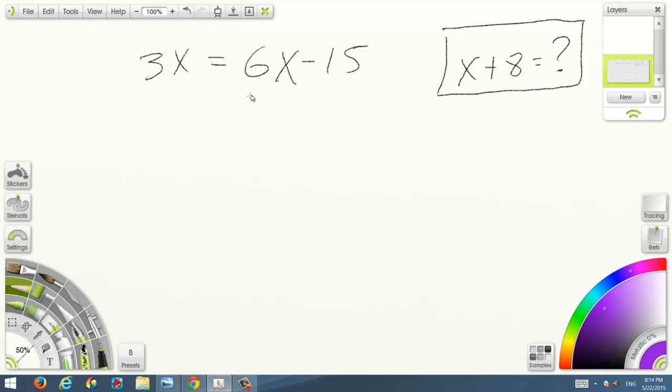I want all the x's on the same side of the equation, so I'm basically gonna subtract 6x here. What I do on one side, I have to do it on the other side to maintain that equality. And this turns into 0.